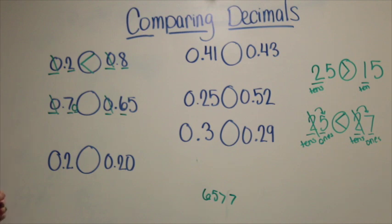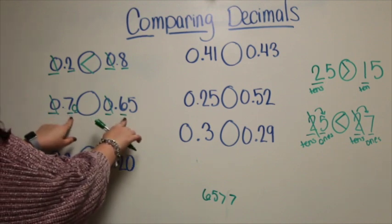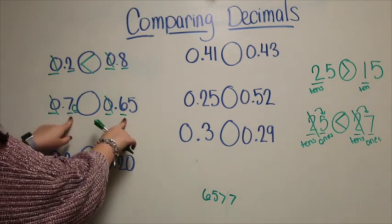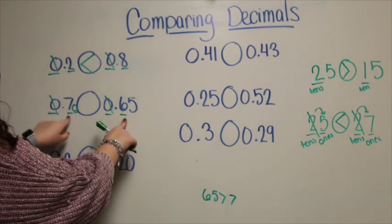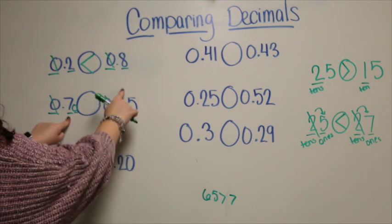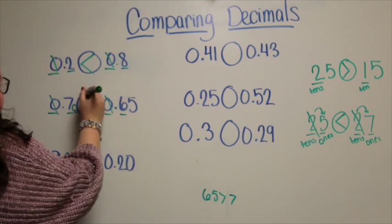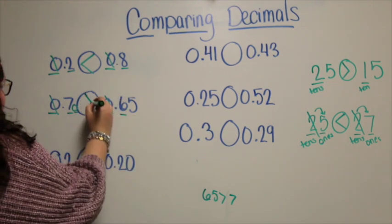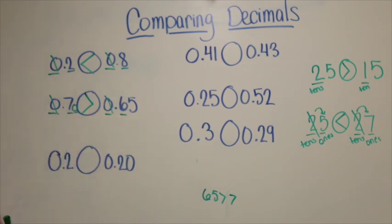You need to take it one place value at a time. So I was in my tenths place — seven is greater than six.